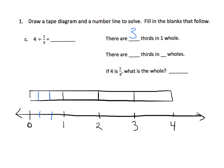And ultimately, if we want to count all of the thirds, we can see that there are 1, 2, 3 in each whole — counting through all four wholes. Each whole has 3 thirds, so that makes 12 thirds in 4 wholes. So we could just take 4 times 3, and that gives us 12.